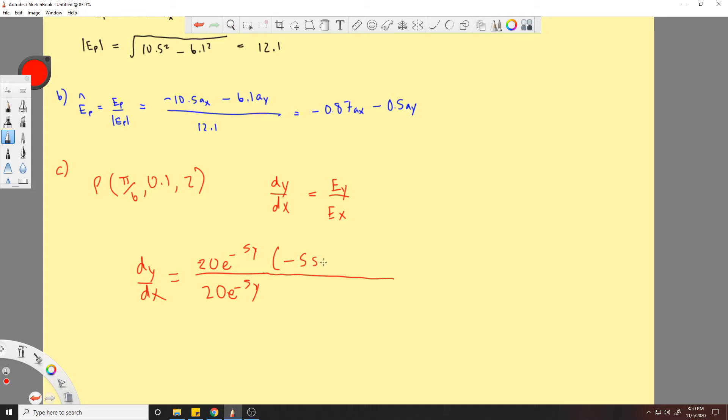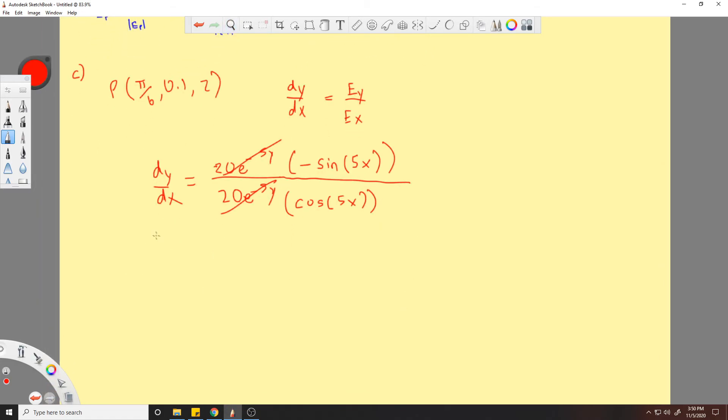Negative sine 5x, and this is going to be the cos 5x. So these terms cancel, and now you're left with equals negative sine 5x over cos 5x.